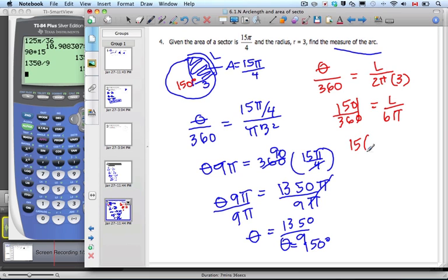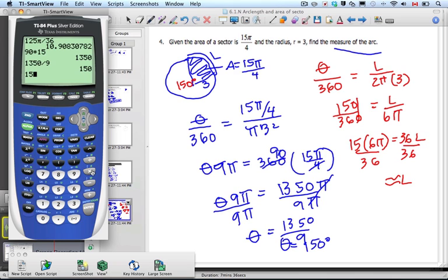360 L, 36 L. So I can just go ahead and divide this by 36. L is approximately 15 times 6 pi over 36. Go second, enter. Back up just one and hit delete.